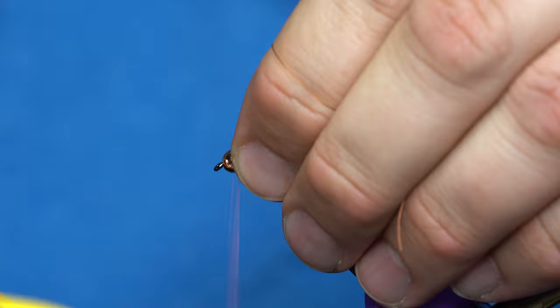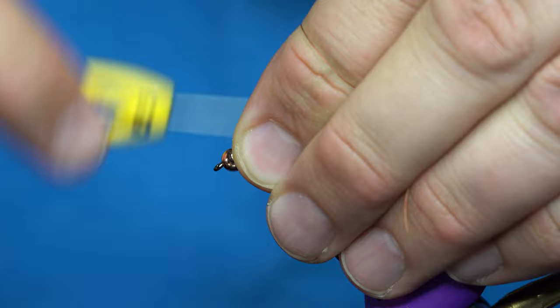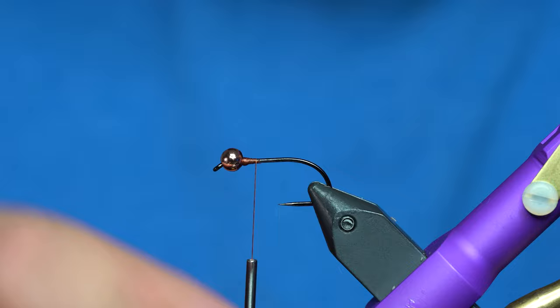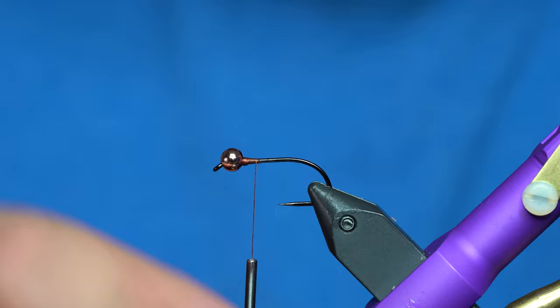I do like to flip this slotted bead so that the bulk of the weight is on the top side of the hook. With any luck, that will ride upside down, avoiding most hang-ups. So, pretty straightforward from here.